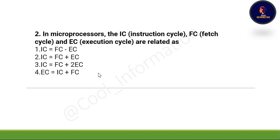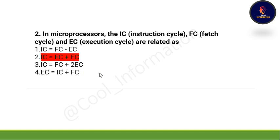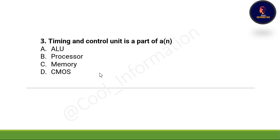Next question: In microprocessors, the IC (instruction cycle), FC (fetch cycle), and EC (execution cycle) are related as: option A, IC = FC − EC; option B, IC = FC + EC; option C, IC = FC + 2EC; or option D, EC = IC + FC. The correct option is option B: IC = FC + EC.